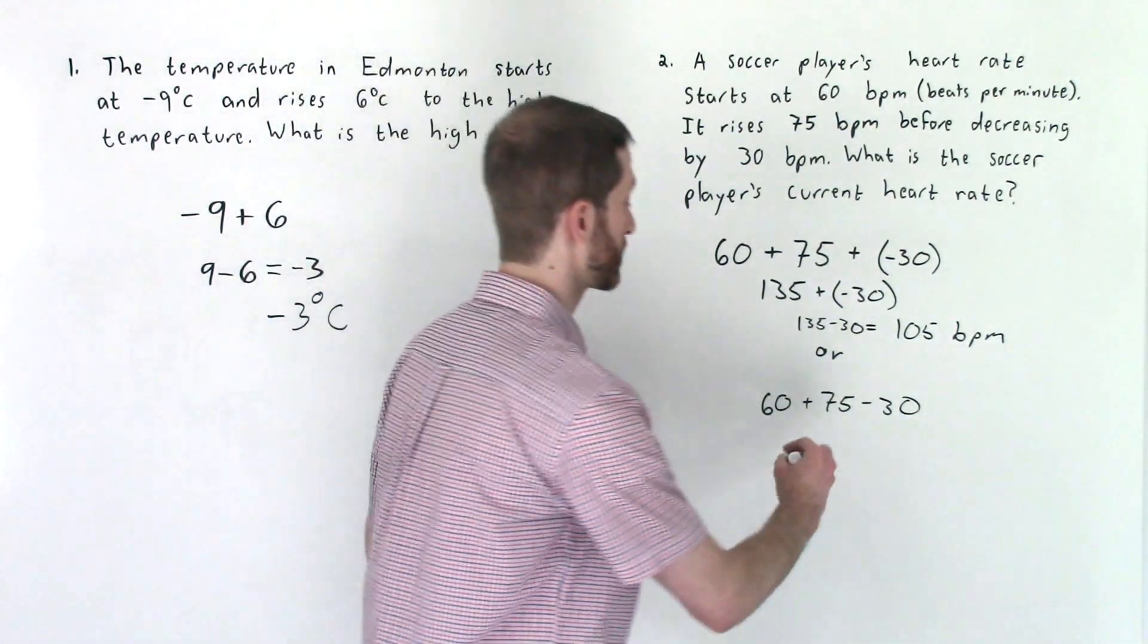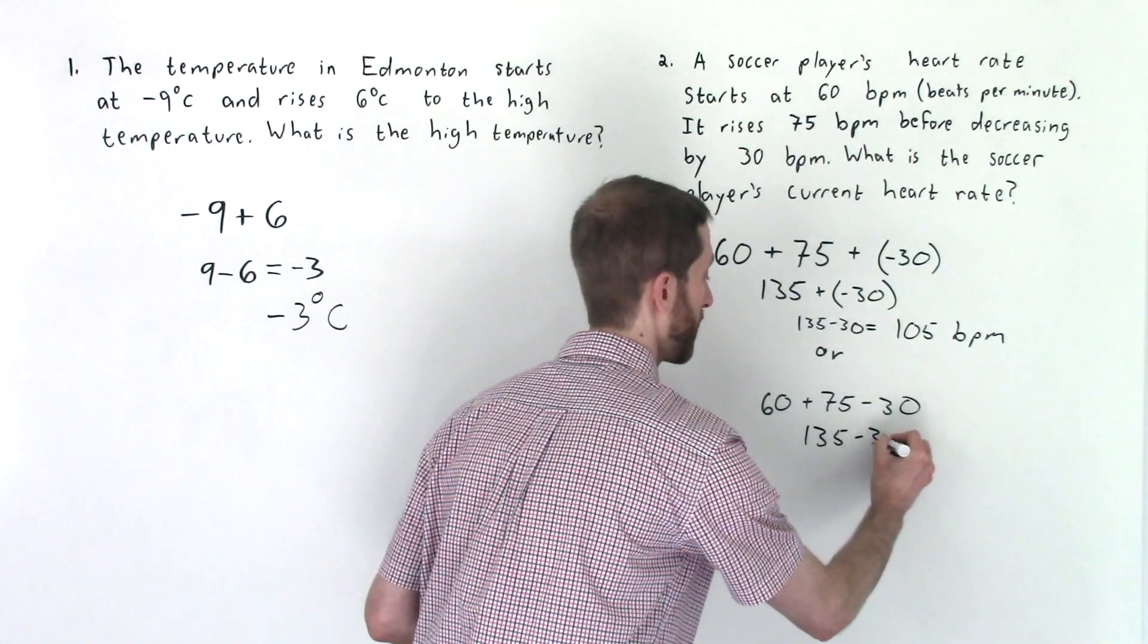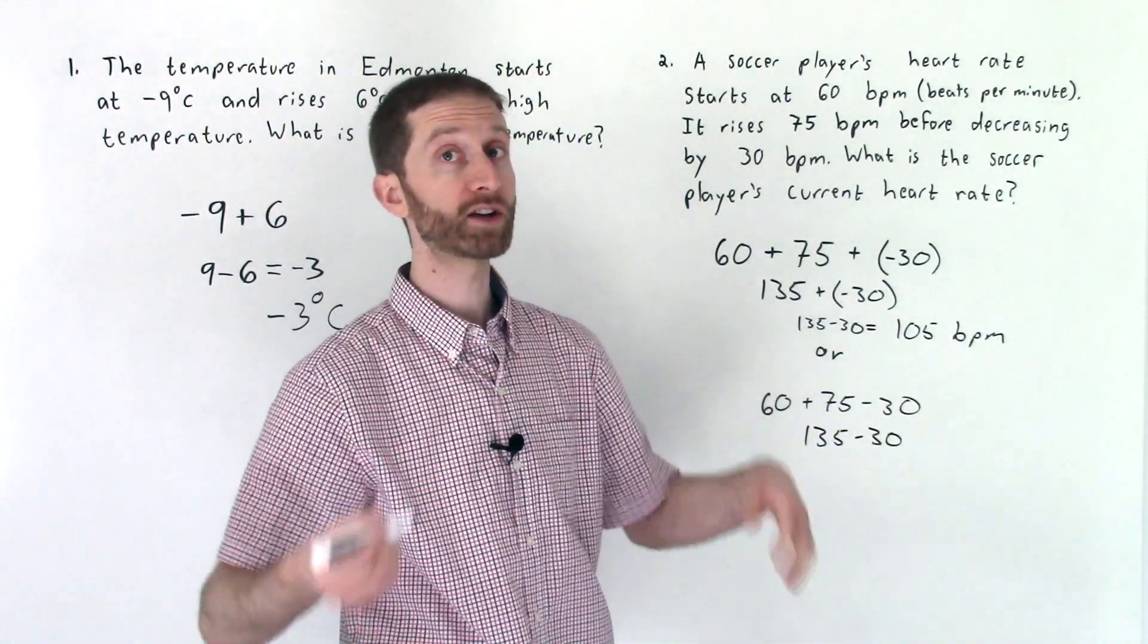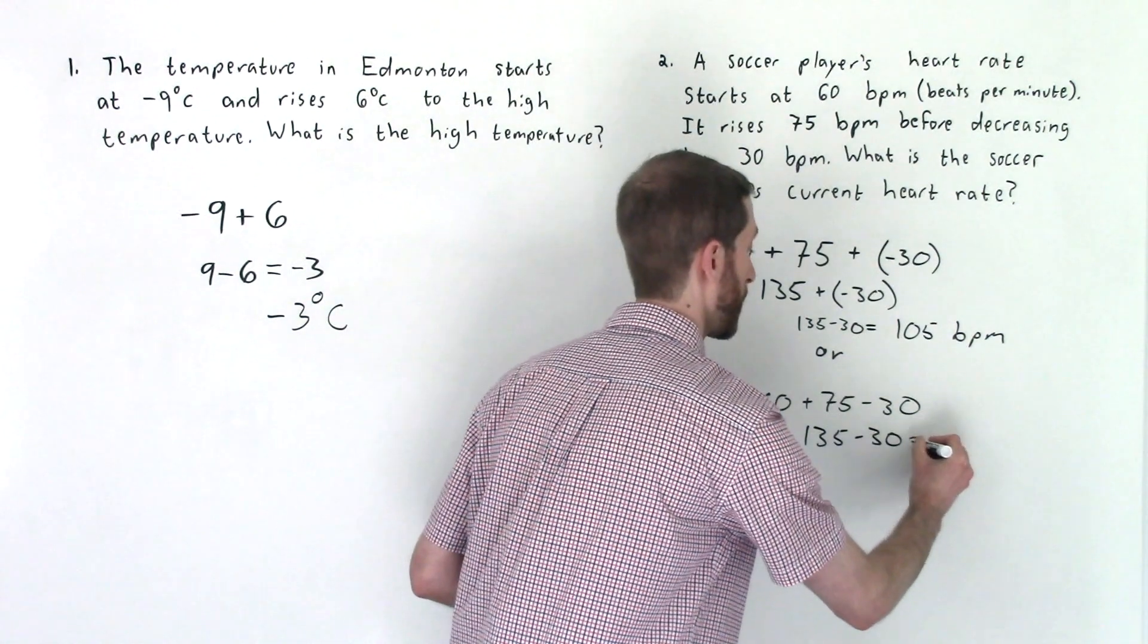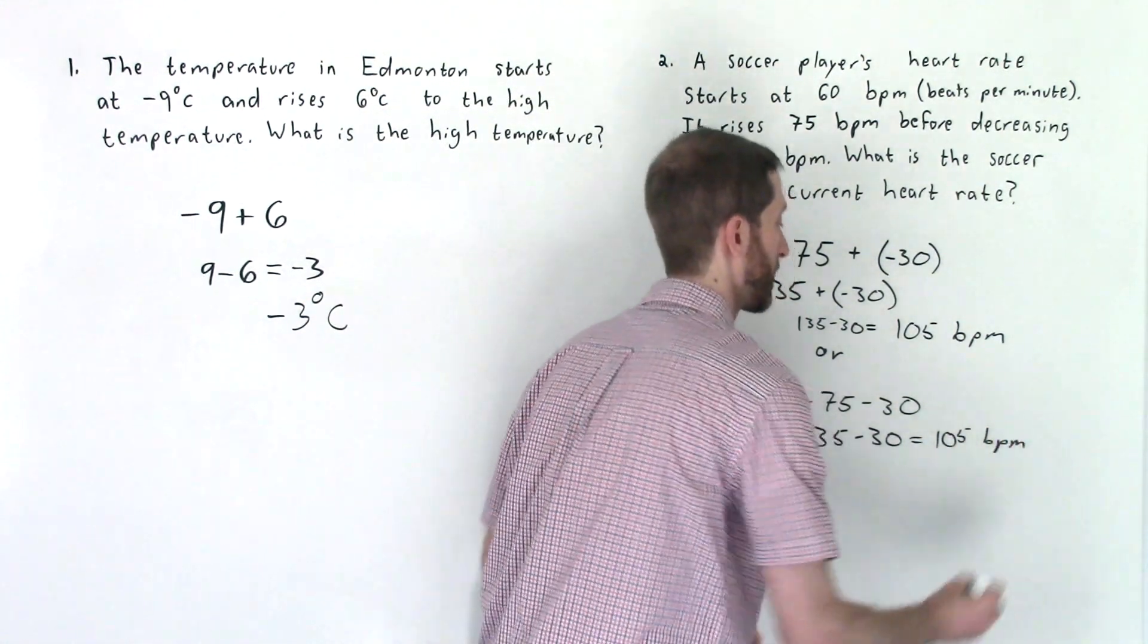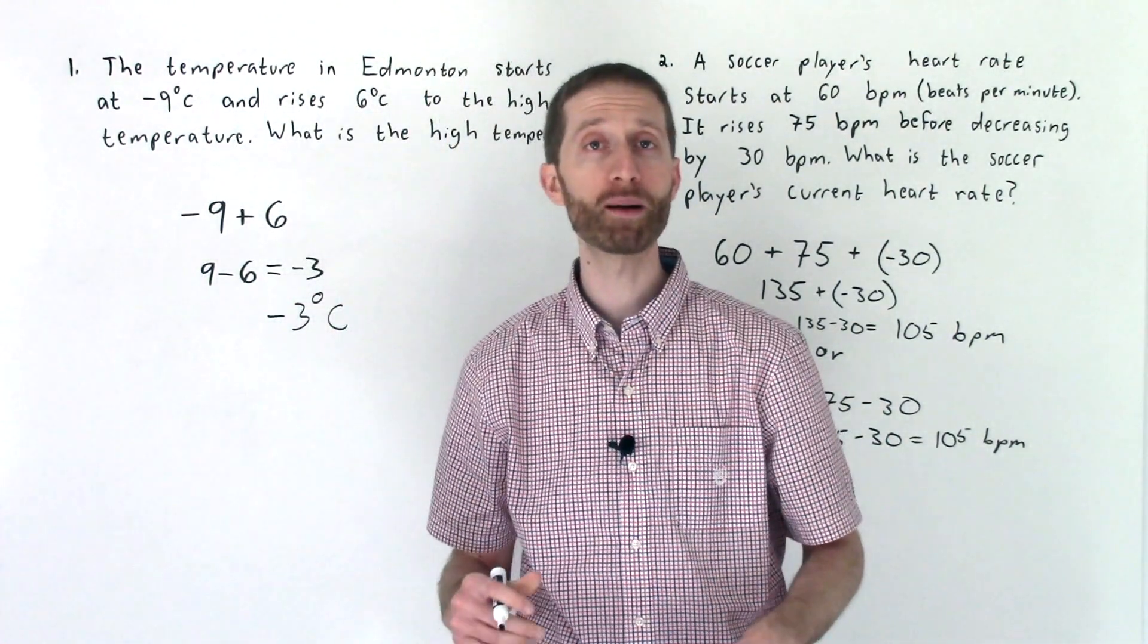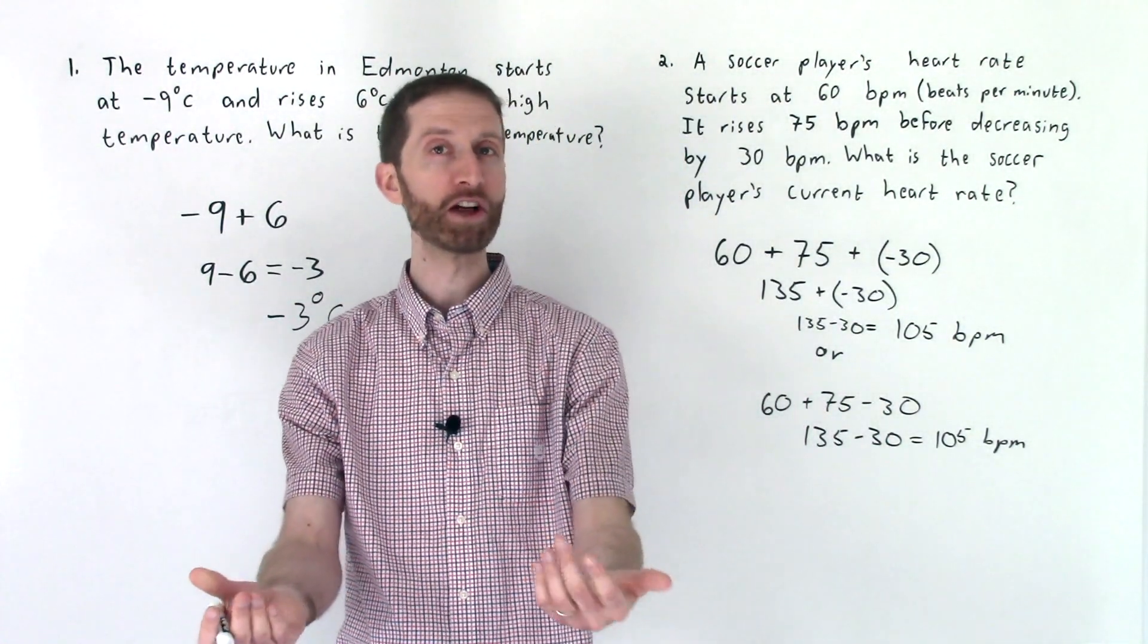We could have done the problem this way as well. And thinking of decrease as subtraction, we'd add these 60 and 75 to get 135. And then normal old subtraction 135 minus 30 is 105 beats per minute. So both are perfectly acceptable and great ways of solving these problems. I hope you enjoyed these word problems that go over how to add integers. I know I did.